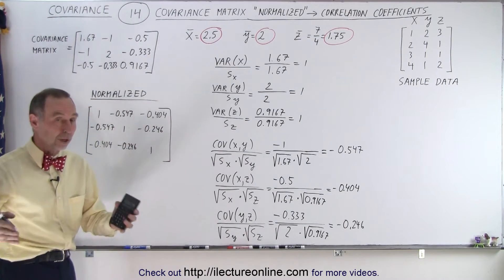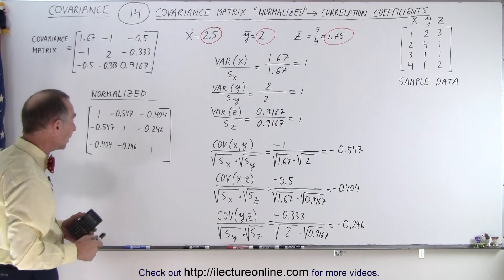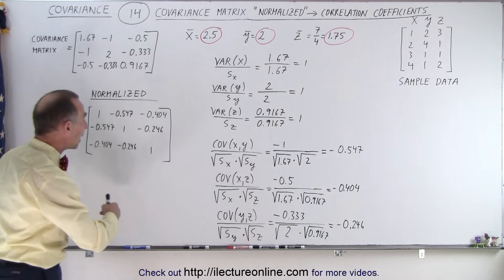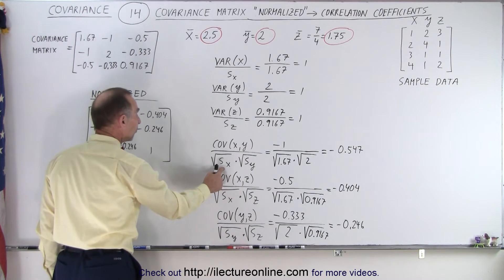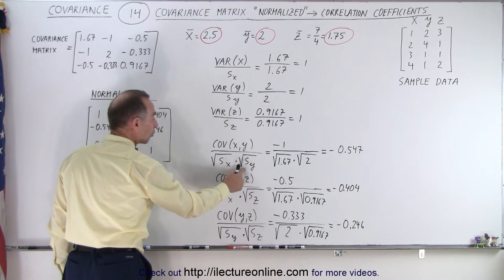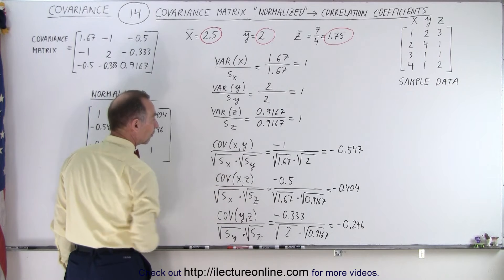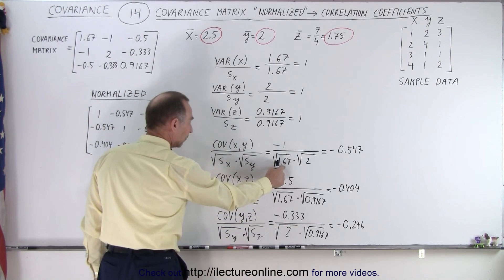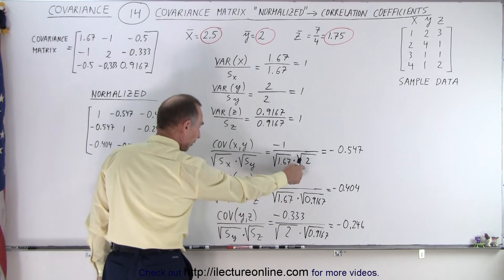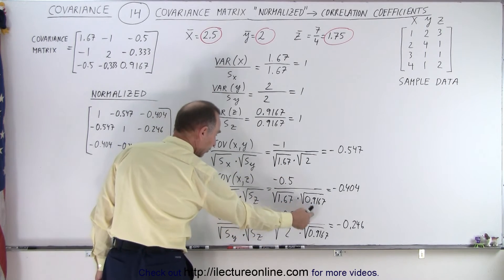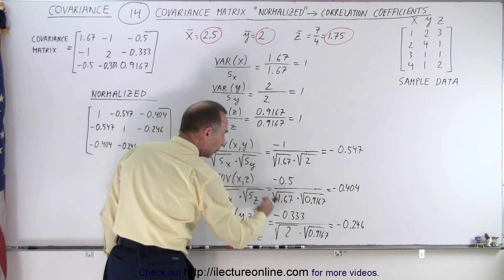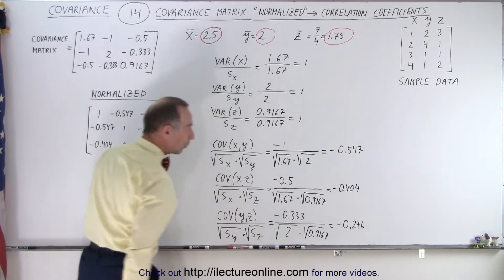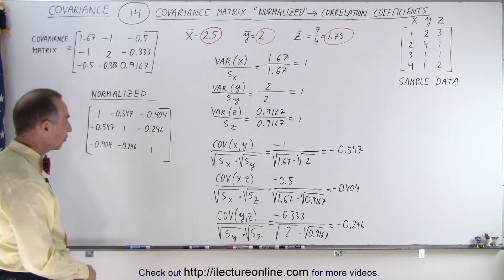Across the diagonals, we expect to find 1s — that makes sense. In the off-diagonals, we take the covariance and divide it by the square root of the variance of one variable set and the square root of the variance of the other variable set — the variance of X, the variance of Y, and the variance of Z. When we divide those products into the numerators, we end up with a correlation coefficient.